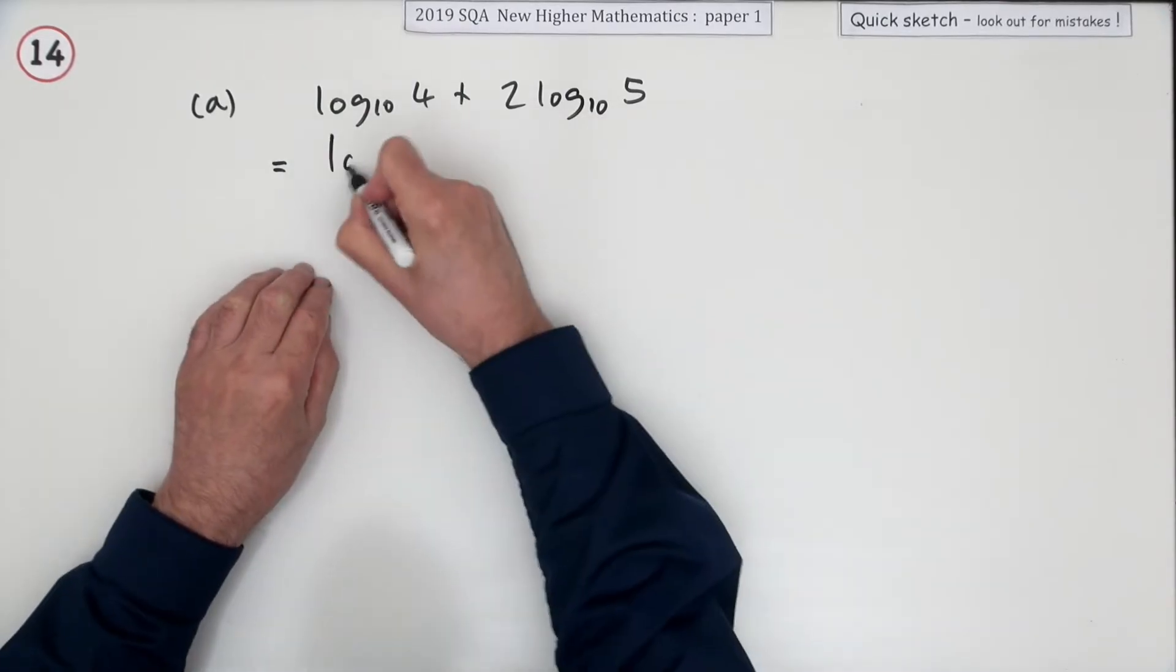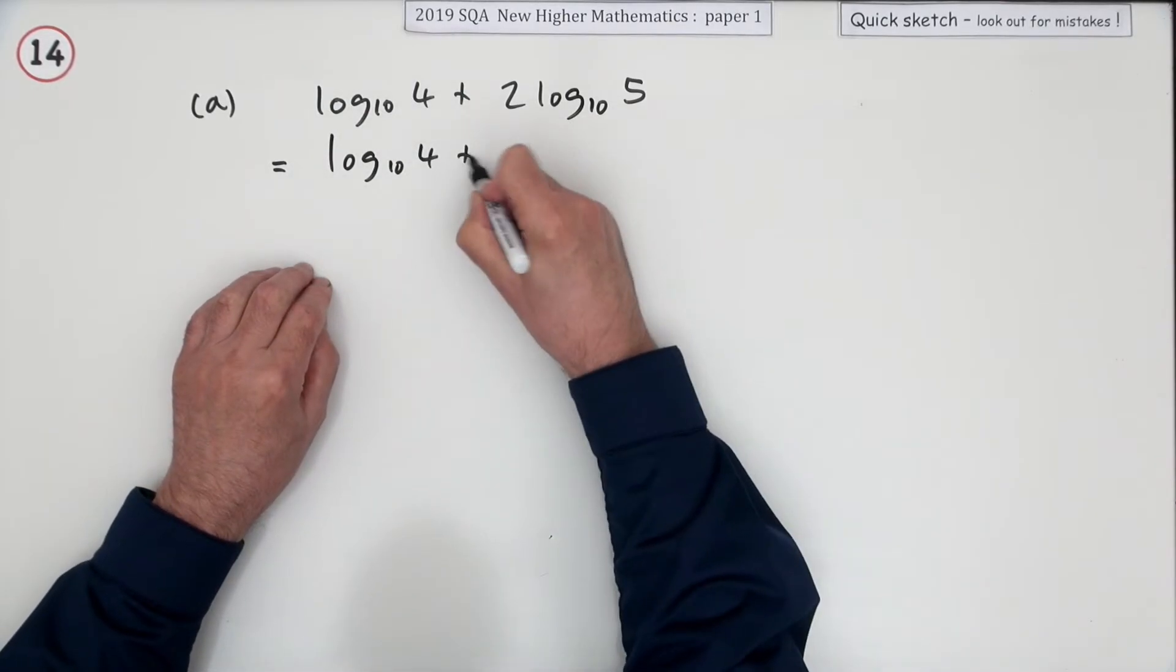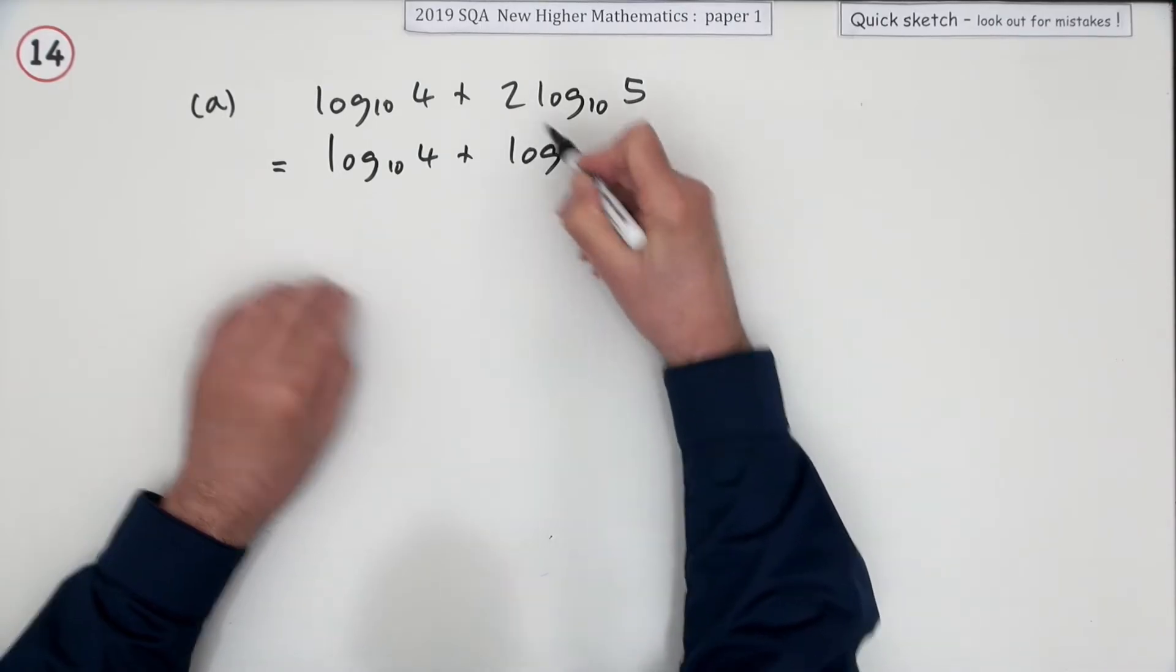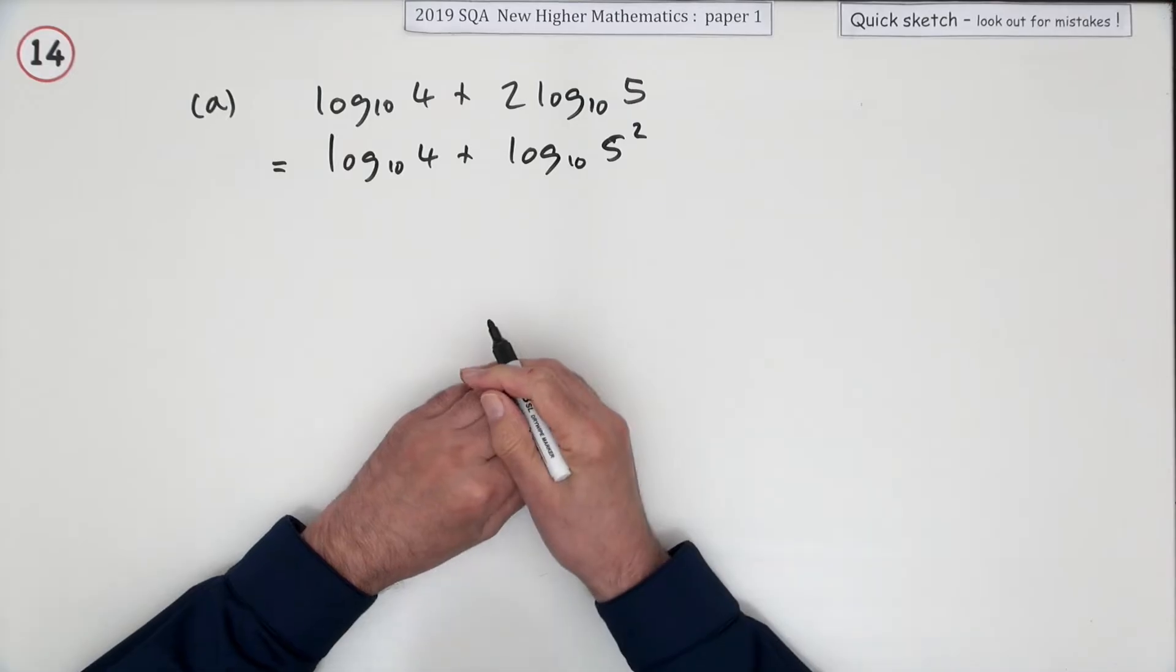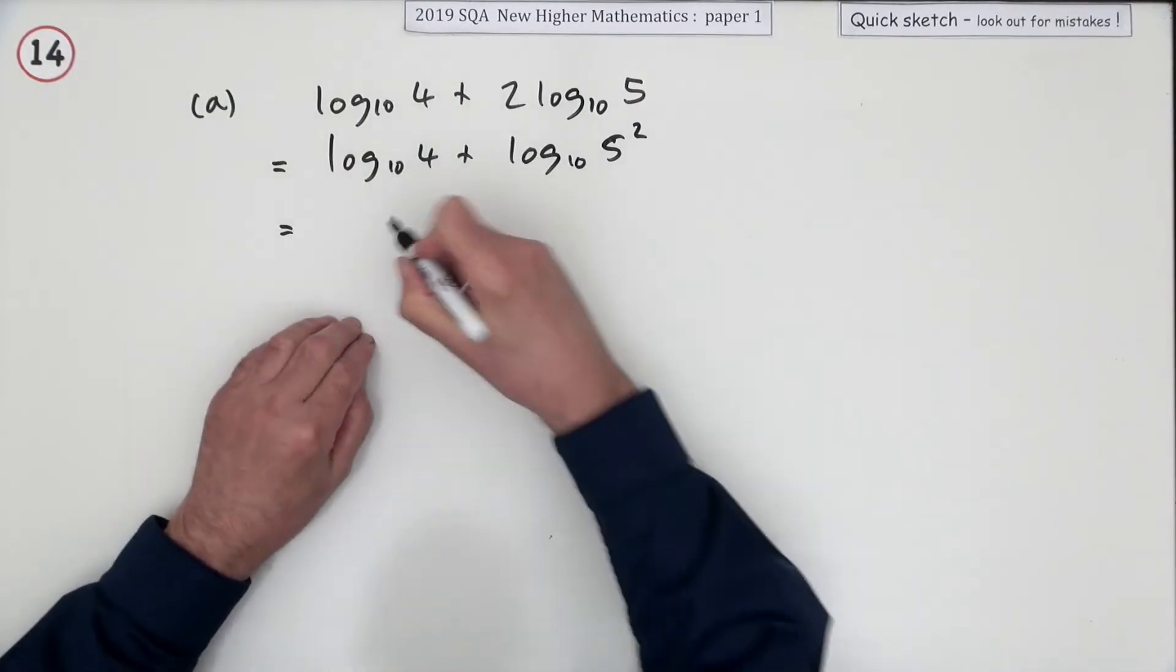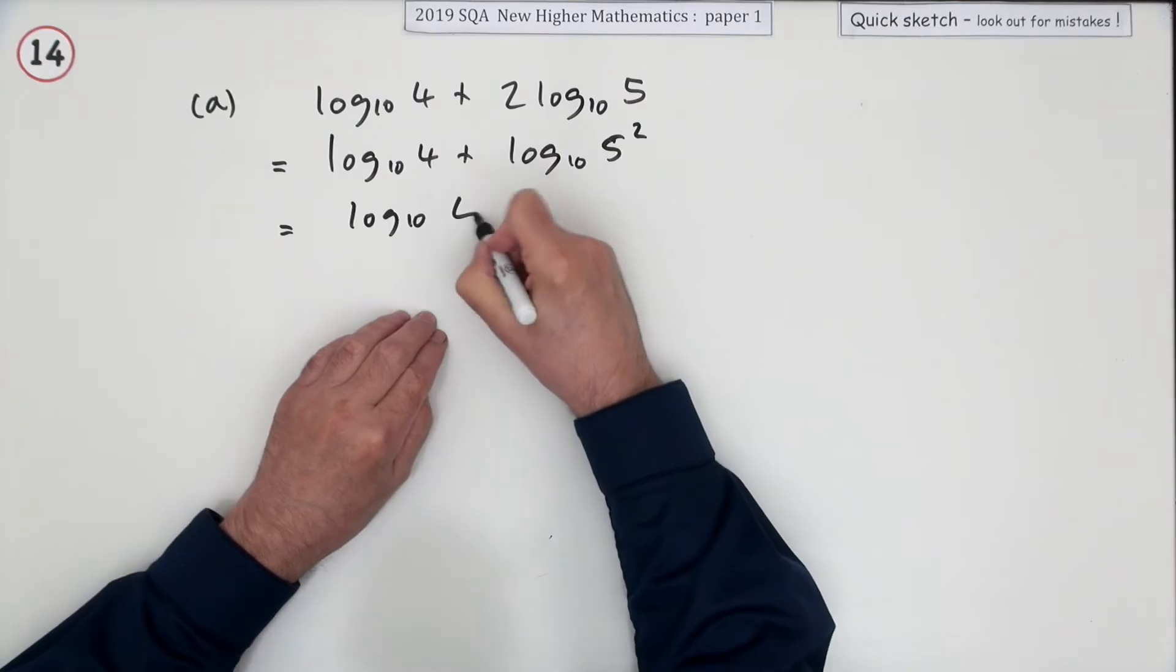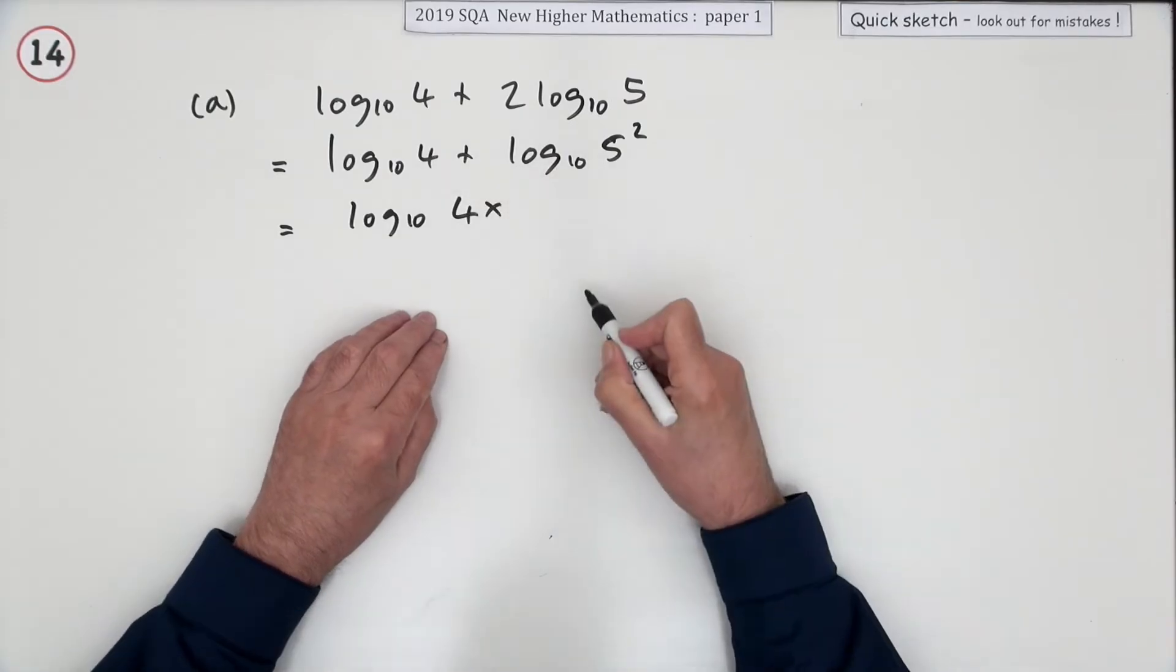So the first rule you're going to be using is if there's a number outside, it can pop inside as a power. Now you can go through adding the logs. That'll be the log of 4 multiplied by 5 squared.